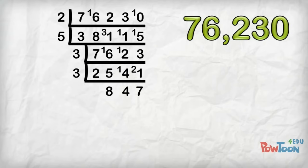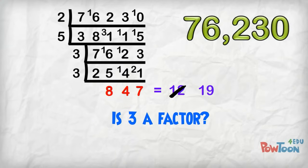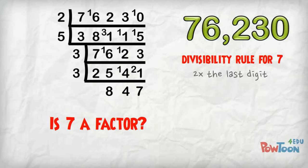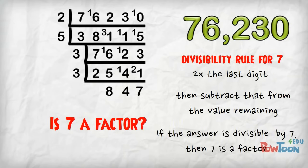847. Is 3 a factor here? 8 and 4 is 12, plus 7 is 19, so 3 is not a factor this time. What about 7? The divisibility rule for 7 says we double the last digit, then subtract that from the value remaining. If the answer is divisible by 7, then 7 is a factor.